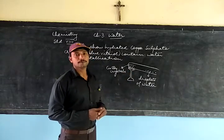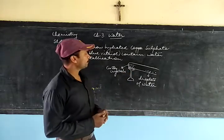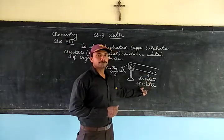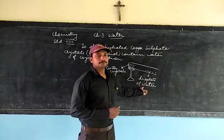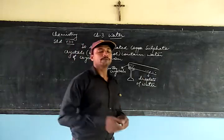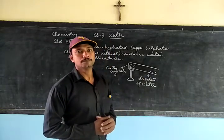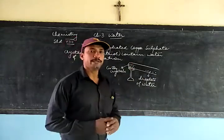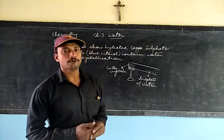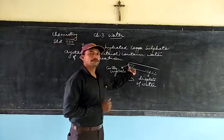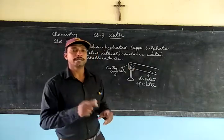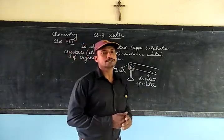When we take copper sulfate crystals and heat them, we find small droplets of water forming near the mouth of the test tube. These water droplets come only from the crystal, which shows that the crystals contain water of crystallization.